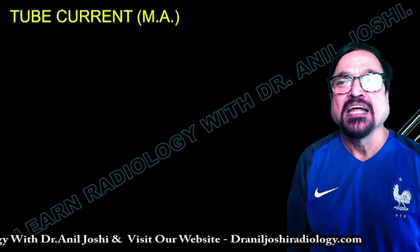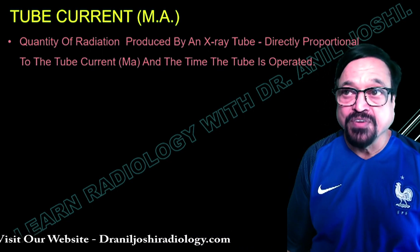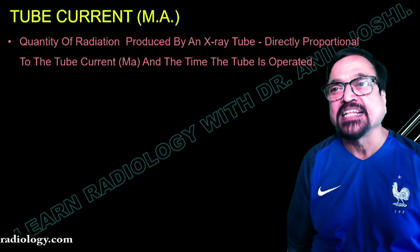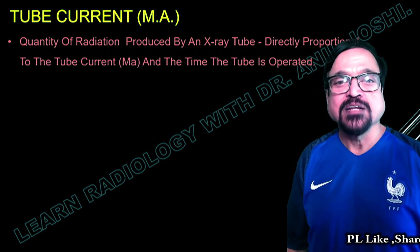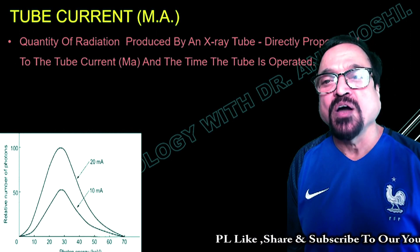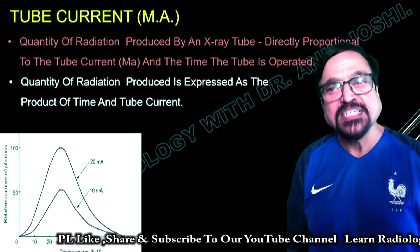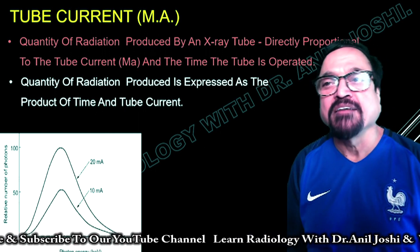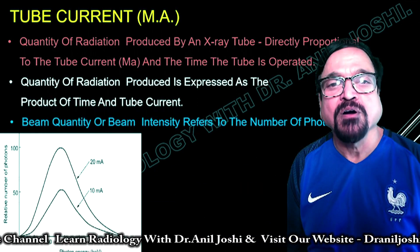Now we come to tube current, that is MA. It is the quantity of radiation produced by an X-ray tube, directly proportional to the current (MA) and the time the tube is operated (exposure timing). These are the two factors which control tube current. This is shown on a graphical range. Quantity of radiation produced is expressed as the product of time and tube current, which we call MAS. MAS is fixed for any radiographic procedure or body part.